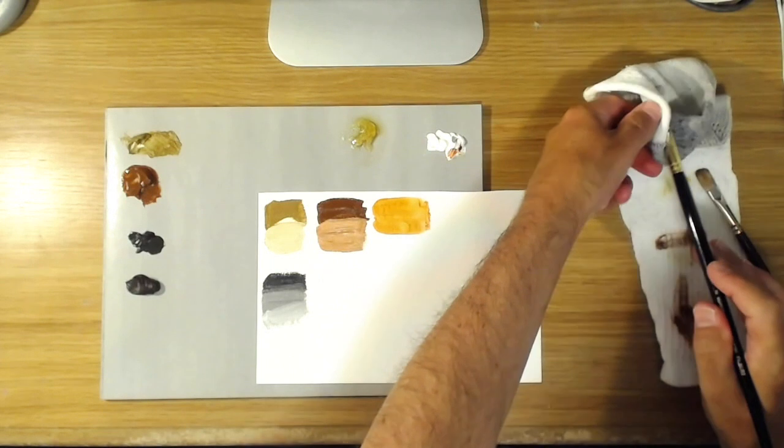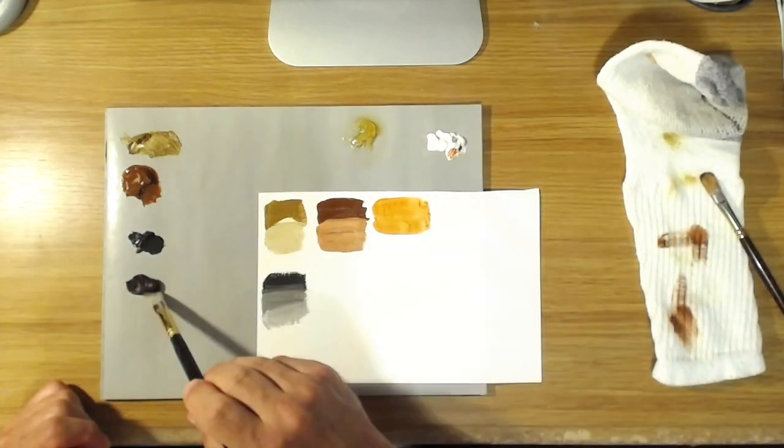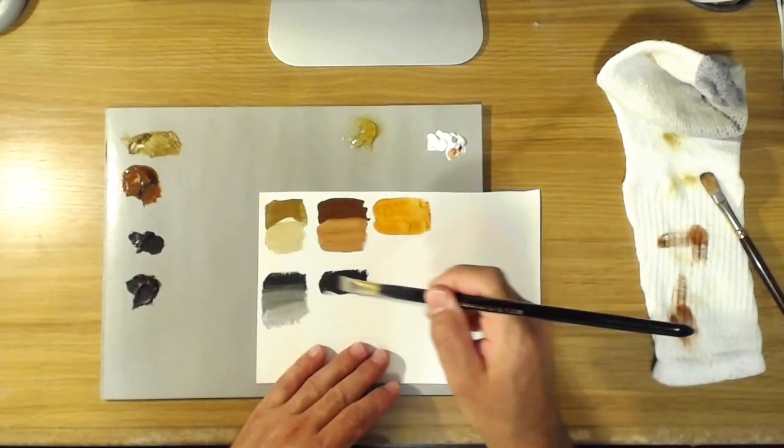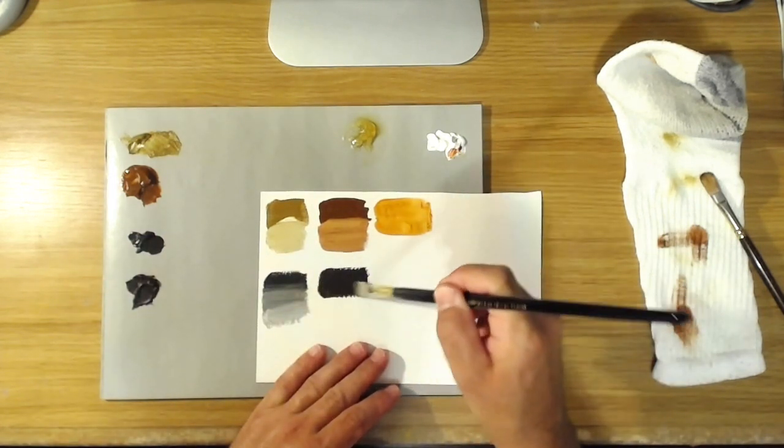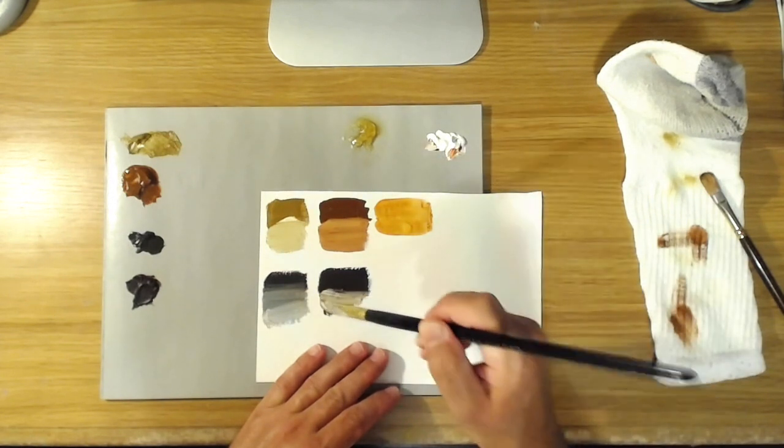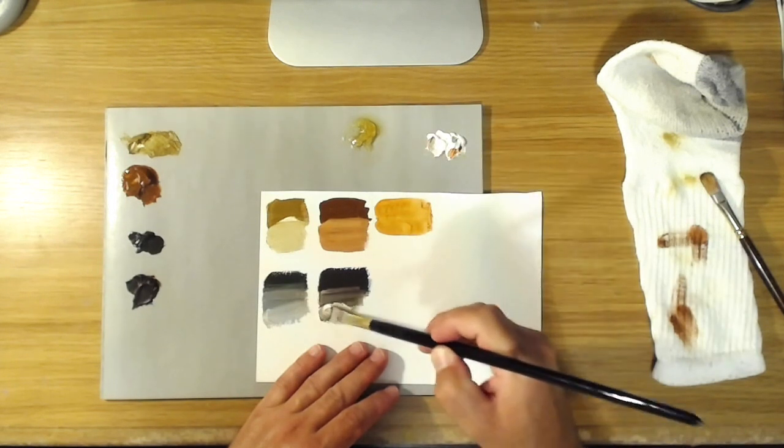But then if you take the burnt umber, which has gone through that calcining process, it becomes this sort of rich coffee brown color, which you can see is much warmer than the raw umber.